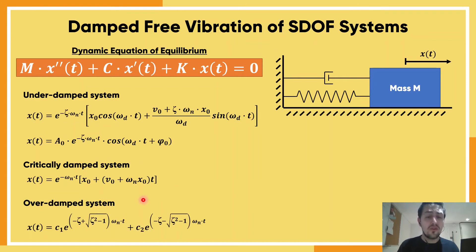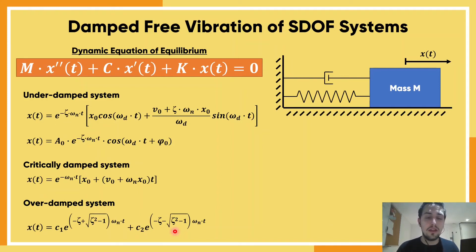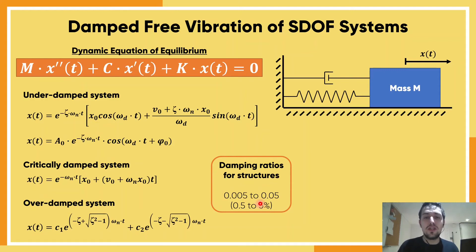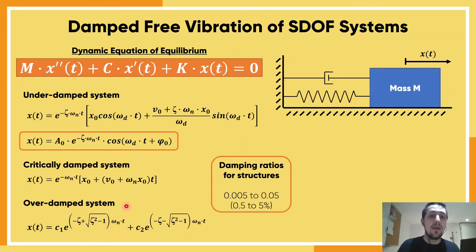This is also valid for the overdamped system. I won't show those equations — I'll put them in the description if you're curious and need to code them. The reason I'm not very focused on these two systems is that damping ratios for structures usually sit around 0.5 to 5%, so we're looking at a damping ratio of about 0.05, maybe 0.1 — definitely not close to a critically damped or overdamped system. We'll basically be working with the underdamped equation. But please remember: the critically damped system is the first system that does not oscillate.